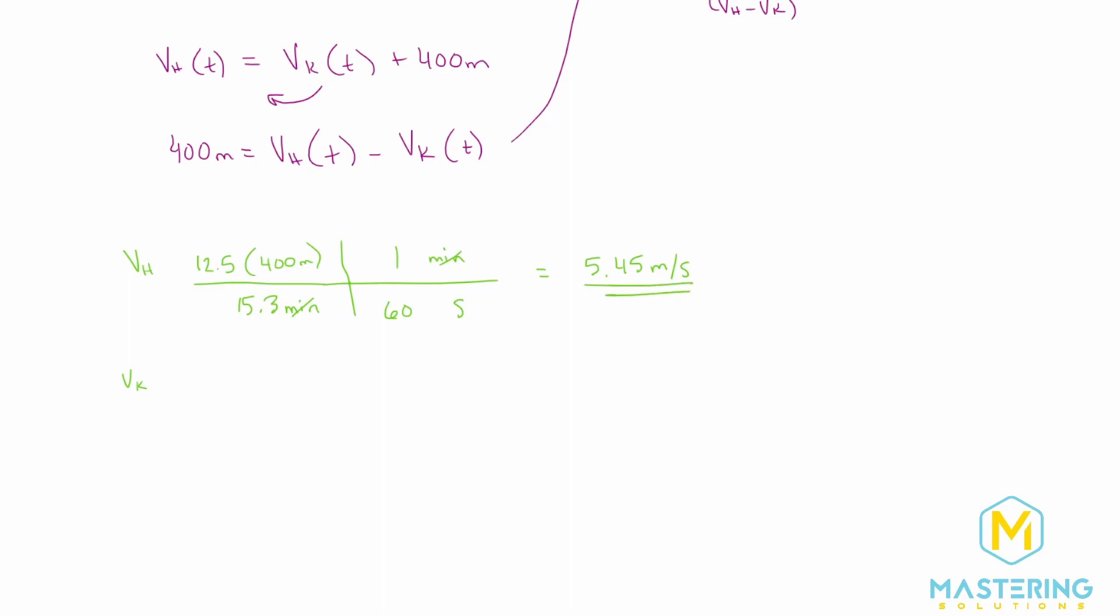And now we need to do the exact same thing for Kara. We know there's 12 and a half laps times 400 meters. And then we'll divide that by her time, which was 17 and a half minutes. And same thing, one minute is 60 seconds.